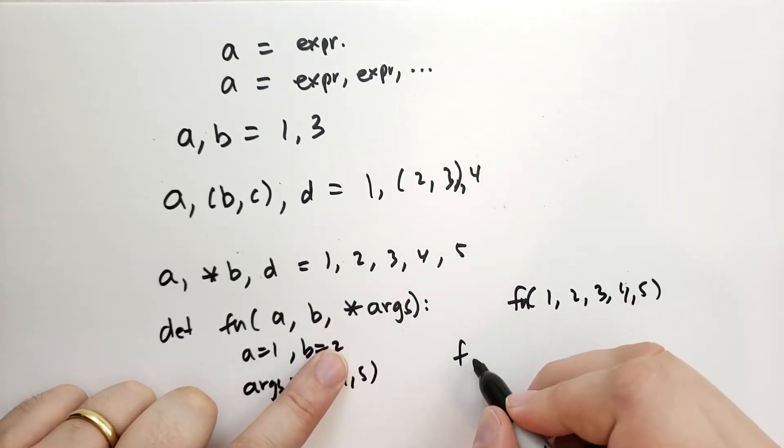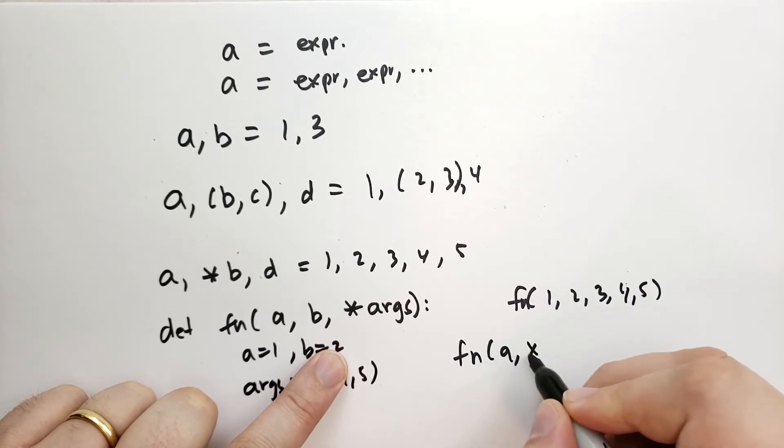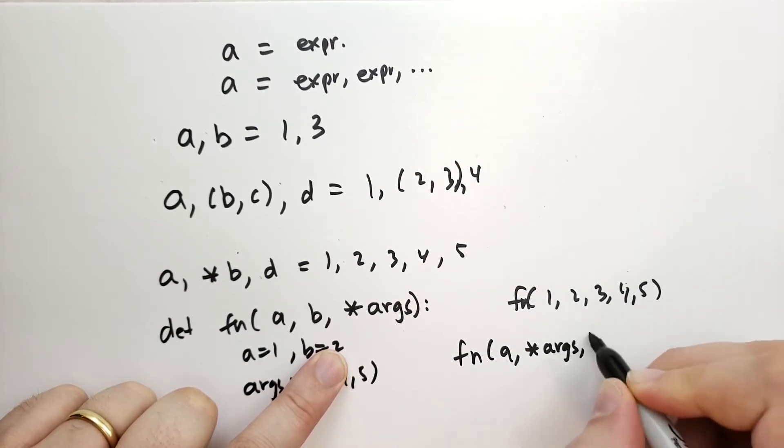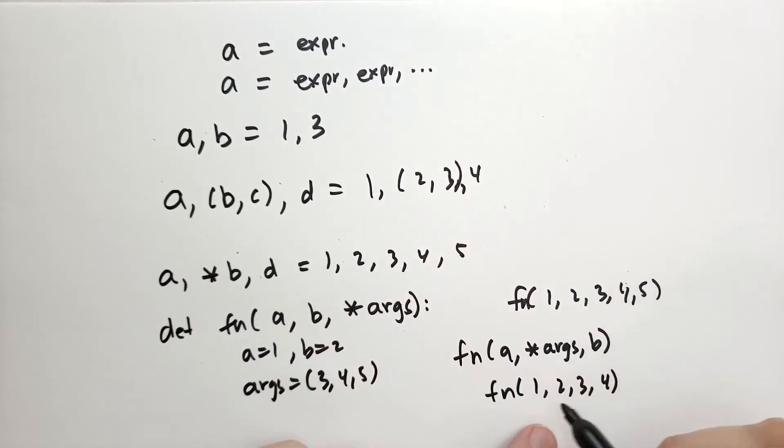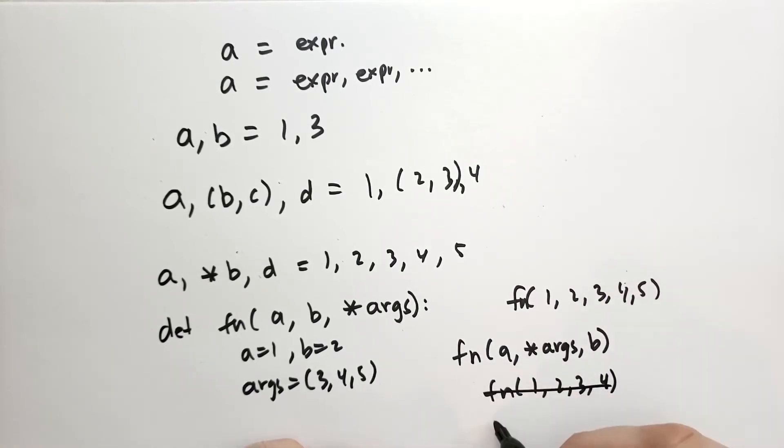Note that in the function you cannot have any parameters after the *args unless you specify them by name. So if I had some function where it's a, *args, b, and I tried to call that like 1, 2, 3, 4, it's going to say this is invalid because you didn't specify the b. So this *args sucks up all the rest of the positional arguments. So instead, I'd have to call it like 1, 2, 3, b=4.